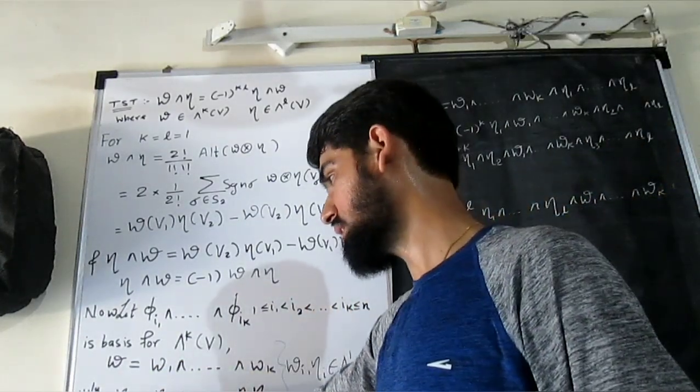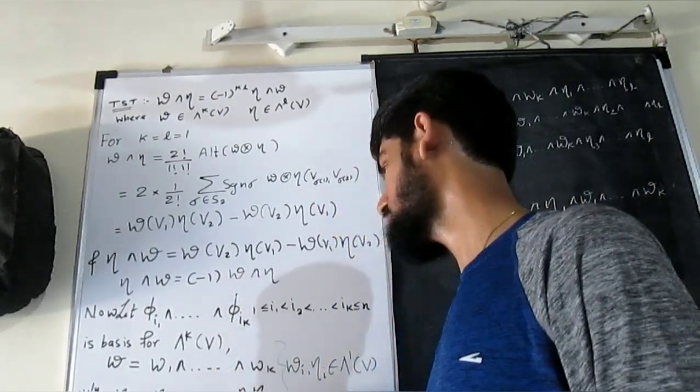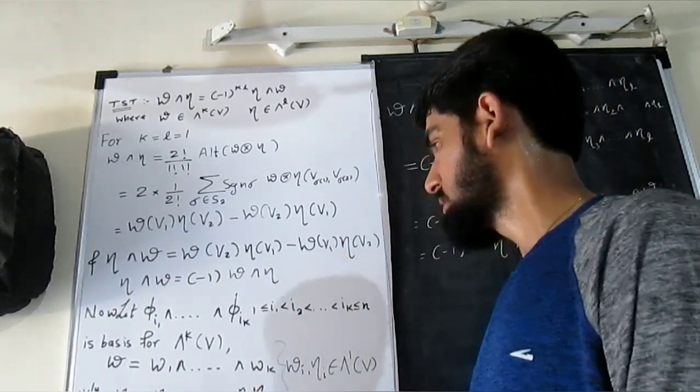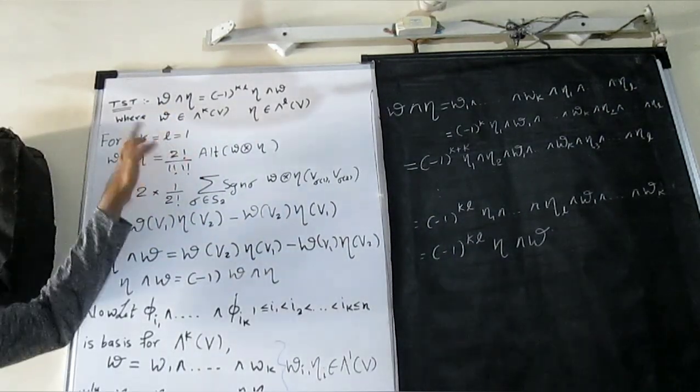Similarly we can work on this eta also. Eta is same as eta 1 wedge product dot dot dot and then we go for a wedge product with eta n. So finally, if we come to our result, that is when k and l are arbitrary.